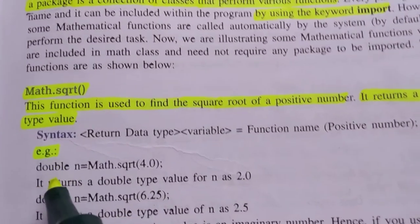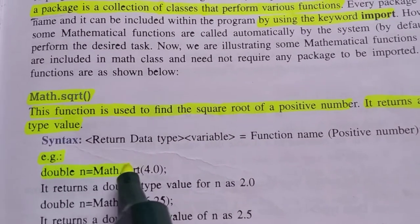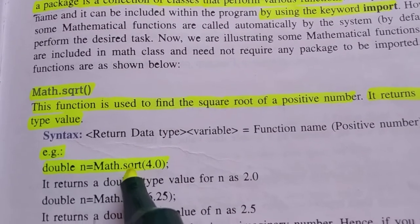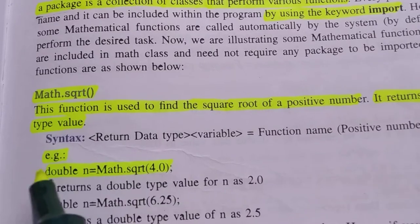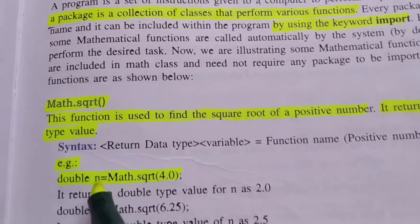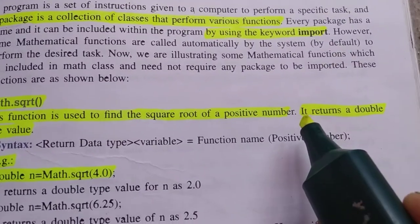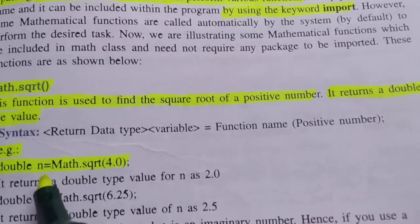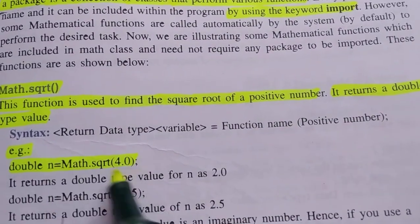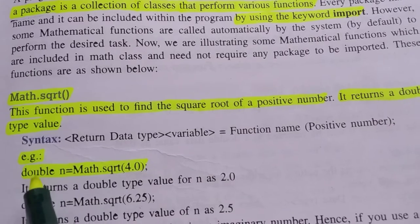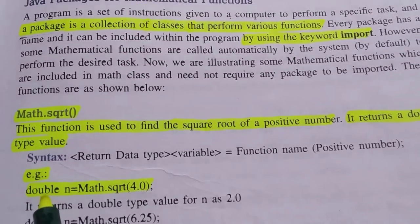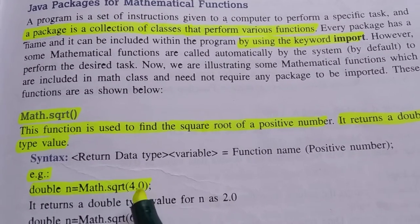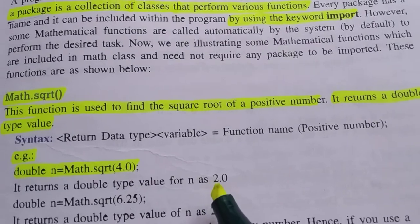See the example: double n = Math.sqrt(...). Whatever square root we are finding, the corresponding value will be stored in n. As mentioned, it returns a double type value, so the value of n after the operation will be stored as double. For instance, the square root of 4.0 will return 2.0.